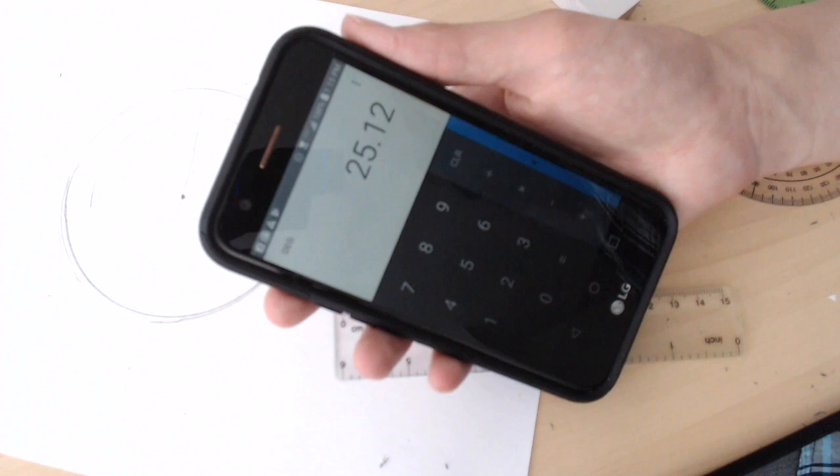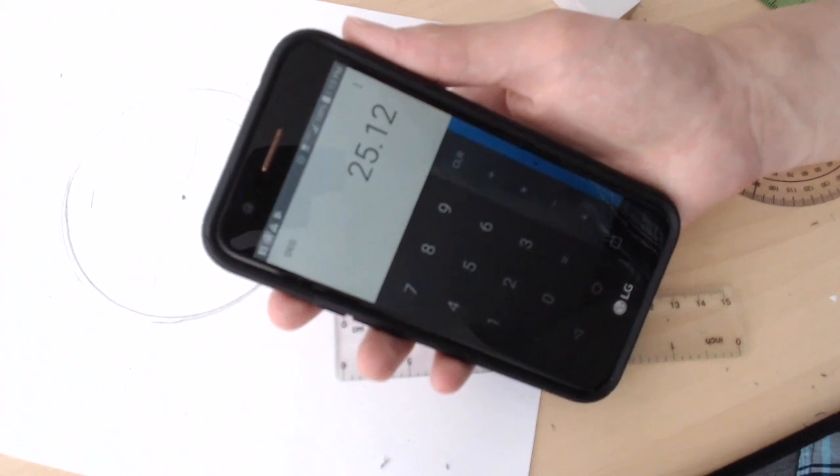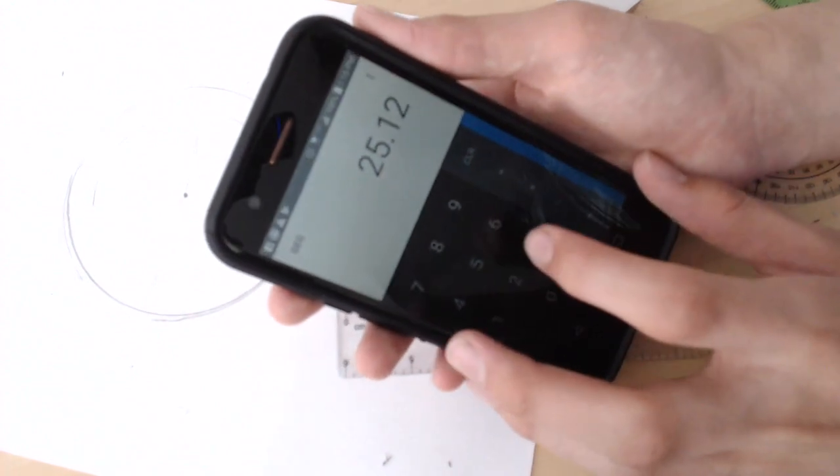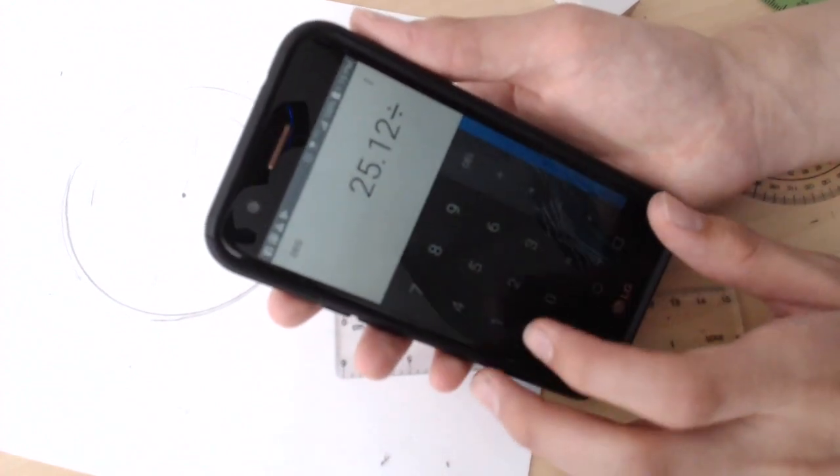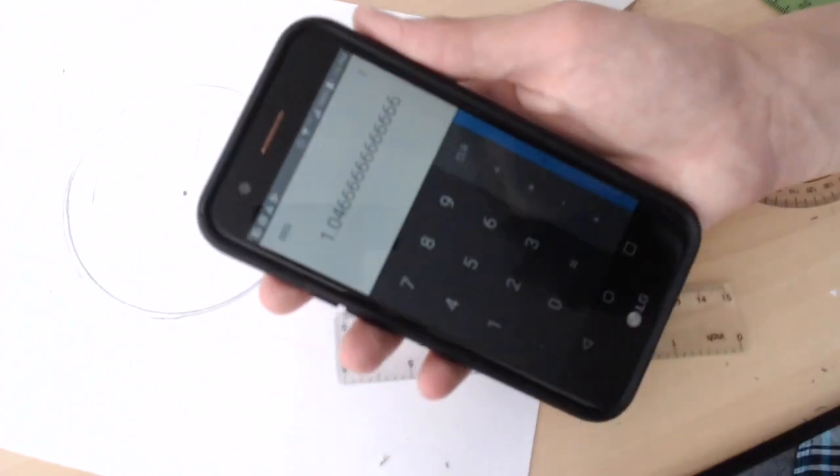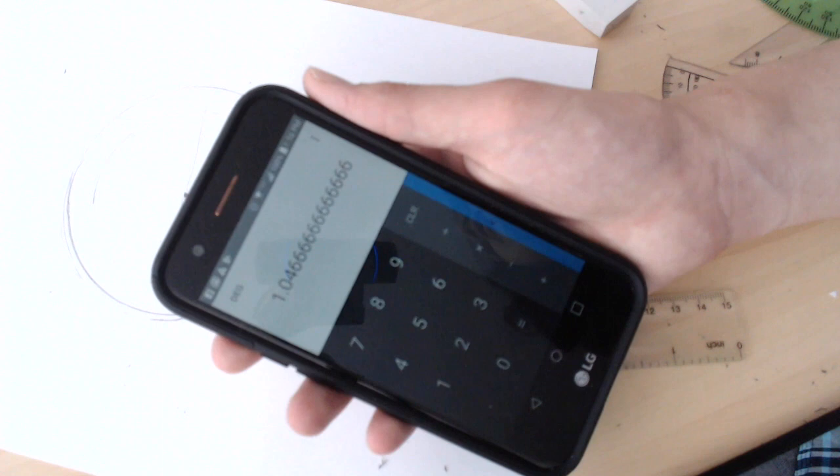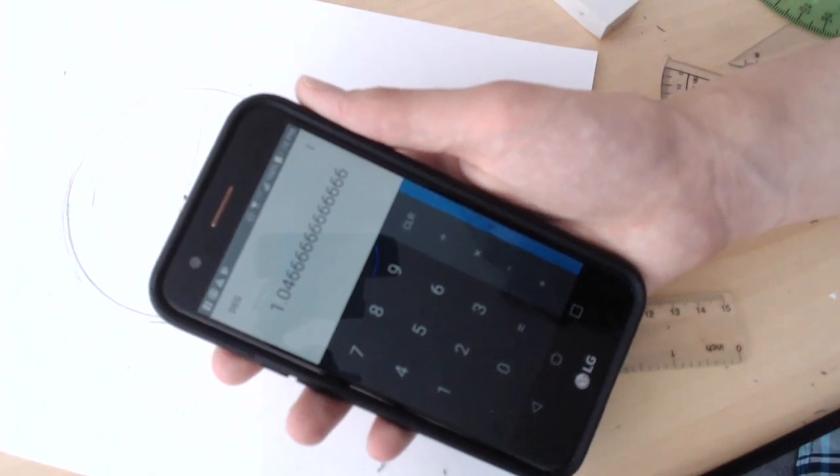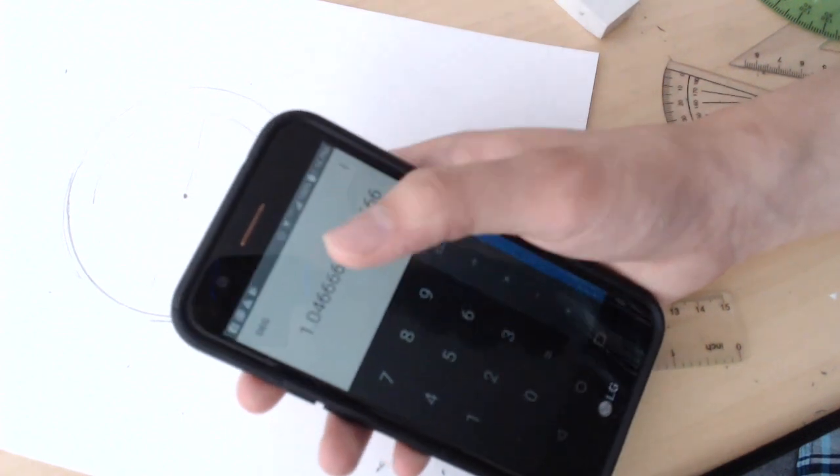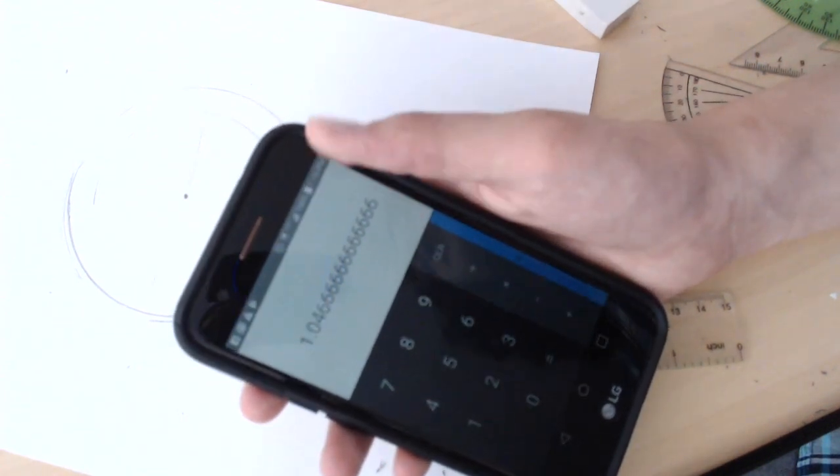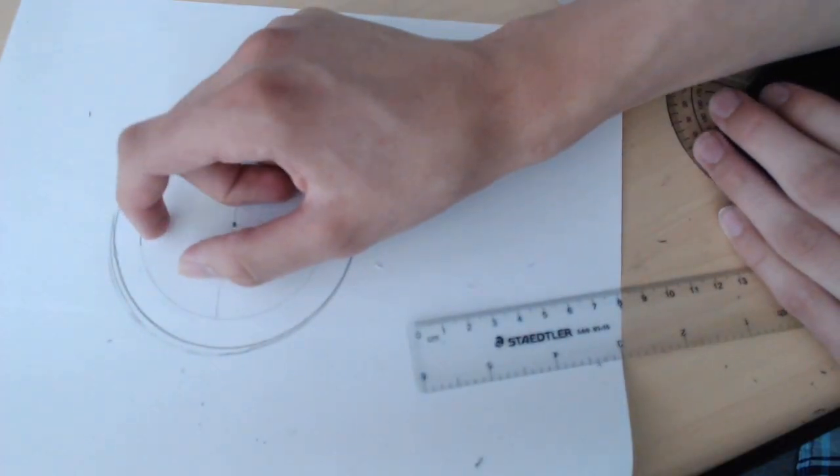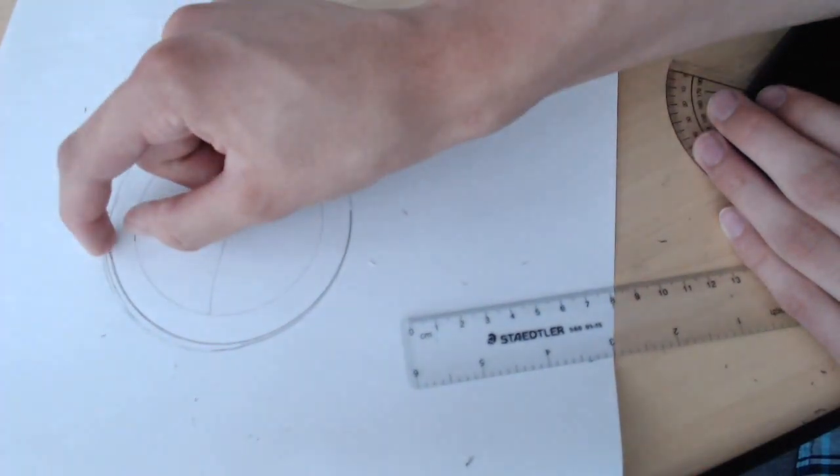So this is kind of arbitrarily chosen but try to pick a number that's even. Let's divide it by 24, so that will give us about one centimeter. So we are going to divide our gear into teeth that are 1.046 centimeters. Again this is not a very accurate way to do this so we are going to round it to about one centimeter. The teeth of the gear will be about one centimeter wide and one centimeter tall.